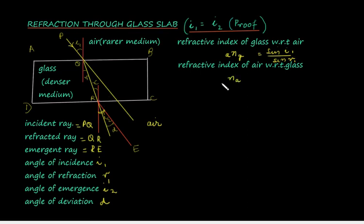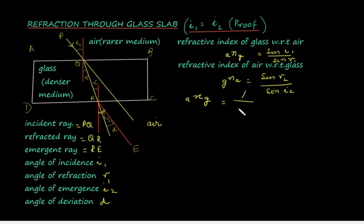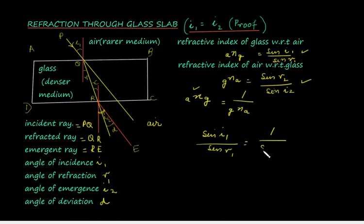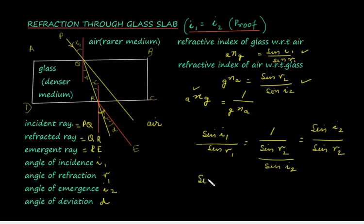The refractive index of air with reference to glass — here the incident ray is inside glass — so n_ag equals sin(r2) divided by sin(i2). The refractive index of glass with reference to air can be written as 1 divided by the refractive index of air with reference to glass. This quantity equals sin(i1) divided by sin(r1), so sin(i1)/sin(r1) equals sin(i2)/sin(r2).